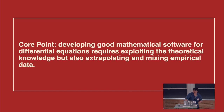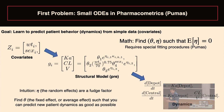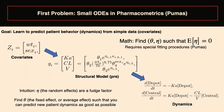I want to show you the stuff I found really interesting and lead you to where it ended up doing something impactful. My core point is that developing good mathematical software for differential equations requires exploiting theoretical knowledge, but also extrapolating and mixing in some empirical data — there's the part that's math, and then the part everyone wants to shy away from because it's just weird practical stuff. It's really fun to think about how to do that in a principled way.